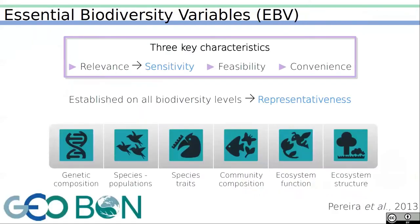To answer partially to these needs, we have Essential Biodiversity Variables, which are biological state variables critical to describe biodiversity change accurately through time, space, and biological organization.